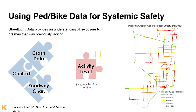Another important way we've been using the pedestrian and bicyclist data from Streetlight at the statewide level is to support our systemic safety analysis. For a long time we've been working with an incomplete puzzle of crash data, land-use context, and roadway characteristics — number of lanes, speed limits, median types — but we really didn't have an idea of the exposure, or the number of pedestrians and bicyclists actually using those roadways. We found that by adding a simplified, aggregated version of the Streetlight indices, we could really improve our accuracy and help prioritize roadway types by adding that missing exposure piece.